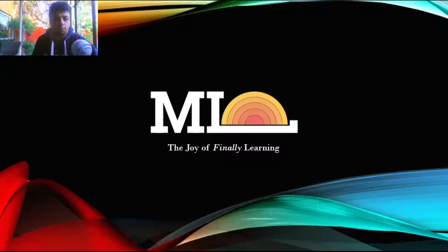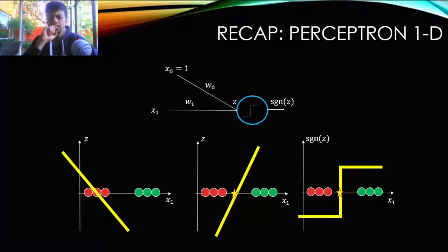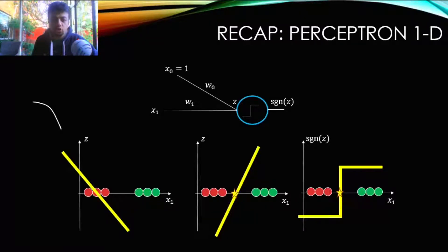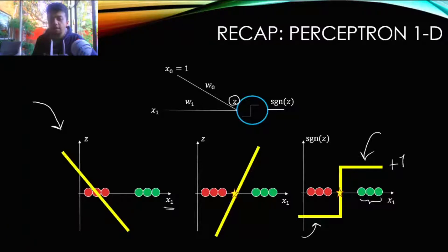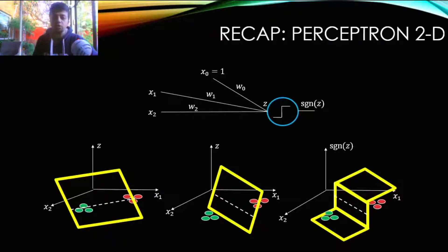For a recap: a simple perceptron can be used to do classification on one-dimensional data. If our data is one-dimensional — say x1 — the decision boundary is also one-dimensional. Z would have one extra dimension, giving us the equation of a line. After applying the threshold, we squash the line on both ends: examples on one side return plus one and examples on the other side return minus one, giving us class positive or class negative.